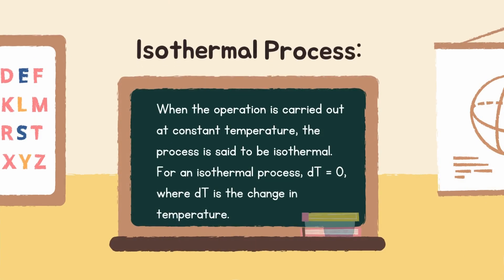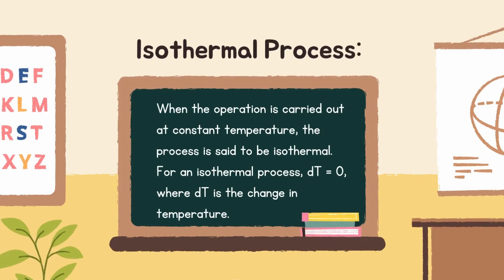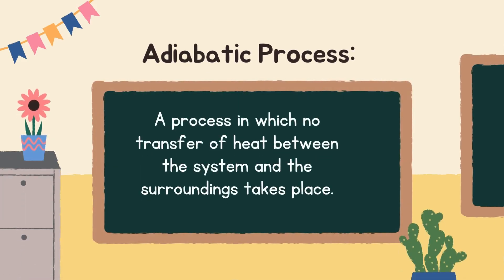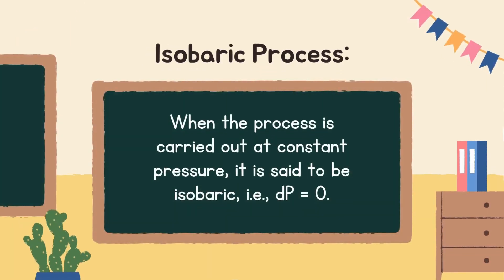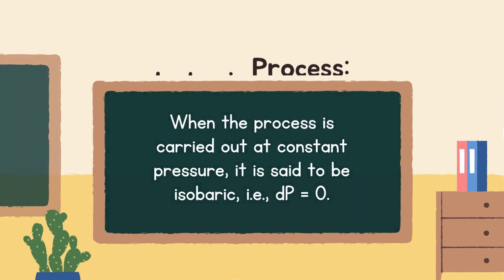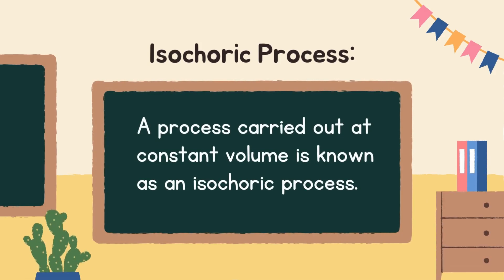Isothermal process: when the operation is carried out at constant temperature, the process is said to be isothermal. For an isothermal process, ΔT equals zero, where ΔT is the change in temperature. Adiabatic process: a process in which no transfer of heat between the system and the surroundings takes place. Isobaric process: when the process is carried out at constant pressure, it is said to be isobaric, that is, ΔP equals zero.